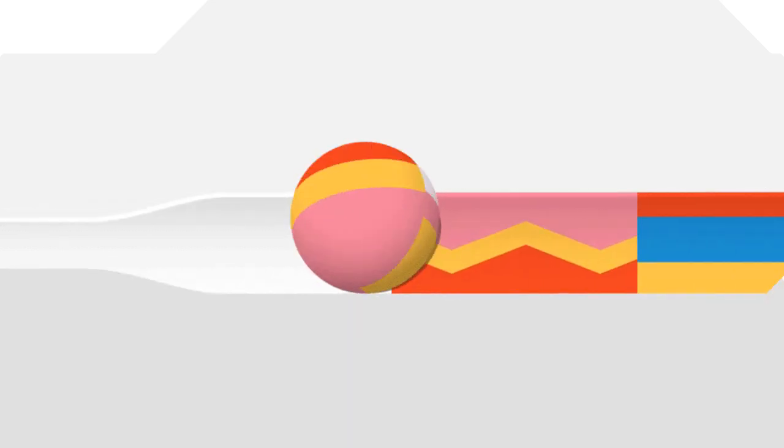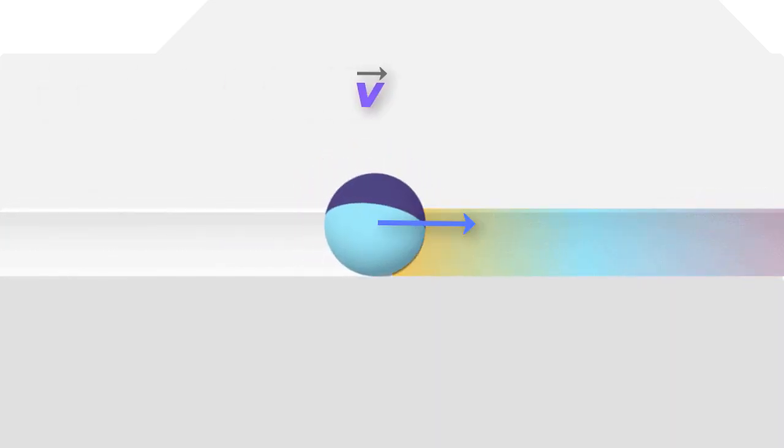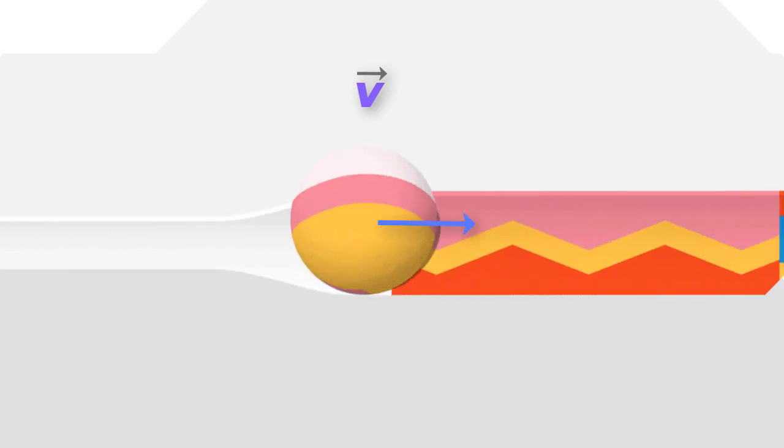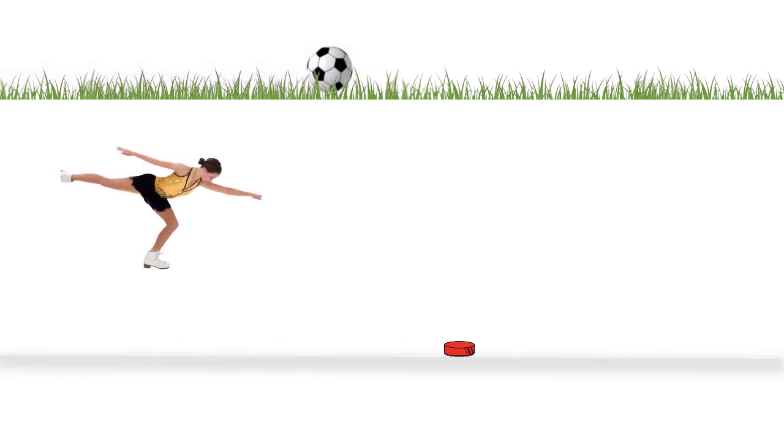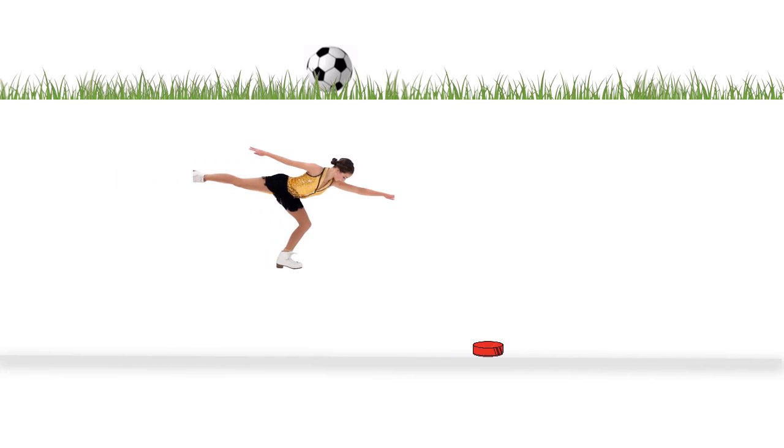Imagine if you set a ball rolling at a certain velocity and it never stops and continues to roll at that velocity forever. But then we don't quite see that happening in everyday life. A rolling football, a sliding puck or a skater eventually comes to a stop.